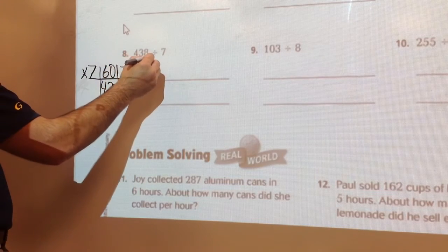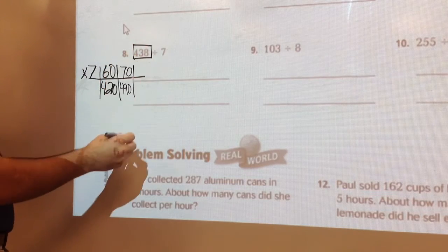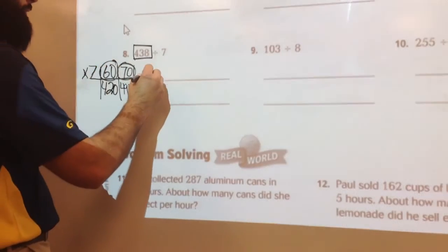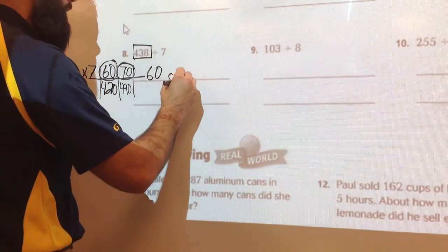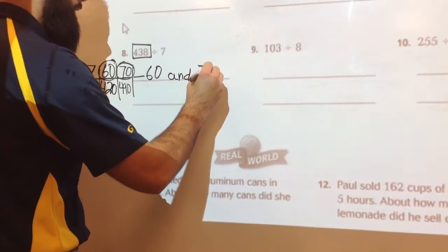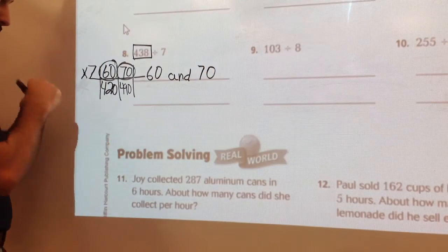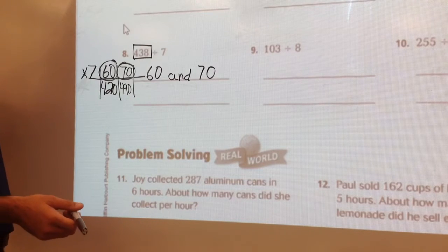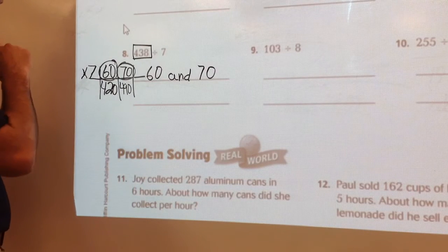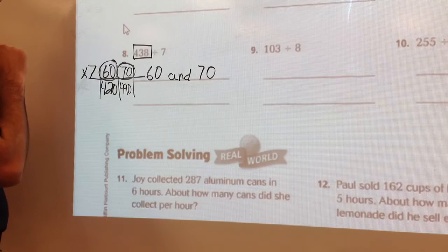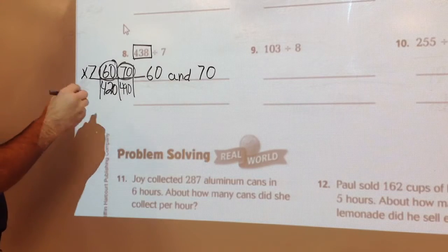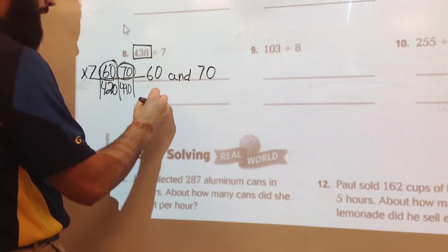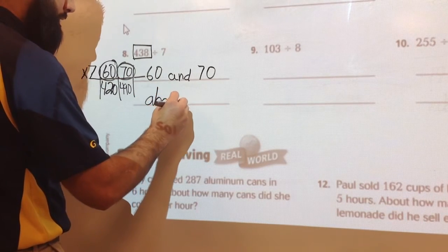Okay, well, 438 is in between those, so it's a, what is it? 60 and 70. Yeah, it's your two top numbers. That's why we put them on top, so we remember them. 60 and 70. About 60. Why about 60, Michael? Because 70 is 490, and 420 is closer than 490. Very good. 438 is closer to 420, so it's about 60. 60, okay.